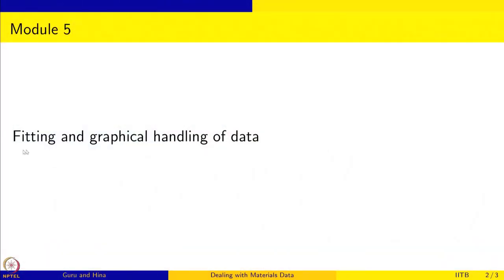We had an introduction to R module, then we did a descriptive statistics module, then we looked at random variables, then we looked at data and from data how to get information about the properties of the underlying distribution — knowing the distribution and not knowing the distribution. We are now entering into the next module, the fifth module, which is on fitting and graphical handling of data.